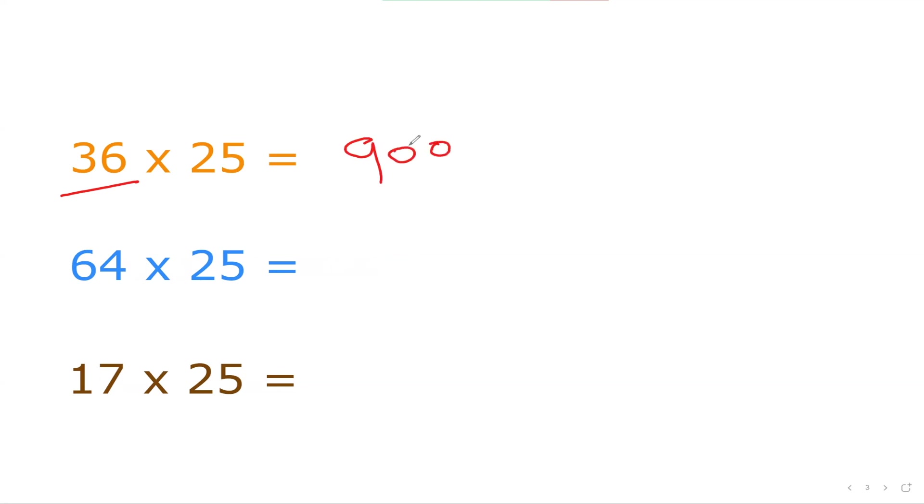That method is working because 25 is nothing else but 100 divided by 4. So what we are doing is we are dividing the number by 4 first and then we are multiplying by 100 by putting 2 zeros at the end.